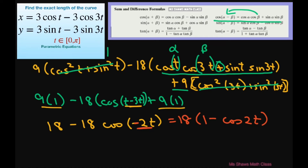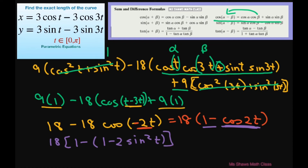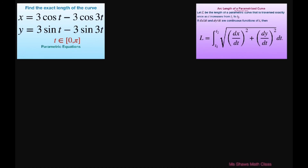Because we'll need to integrate this, I'll apply the double angle formula and write 1 minus cosine(2t) in terms of sine. The 1's cancel and the negatives give a positive, yielding 18 times 2 sine squared of t, which equals 36 sine squared of t. So under our radical sign we have 36 sine squared of t.